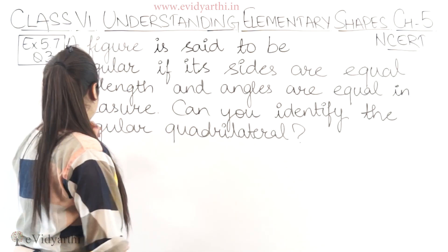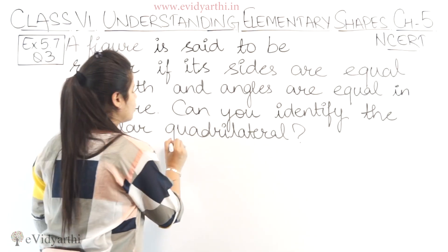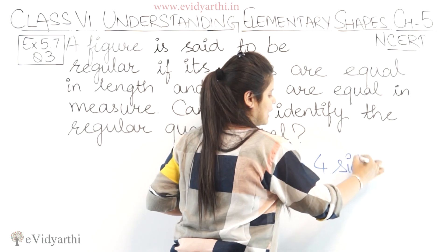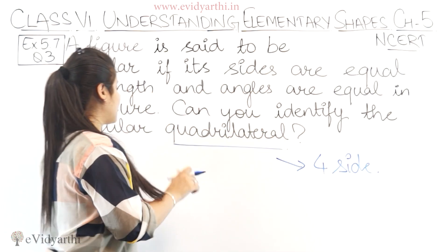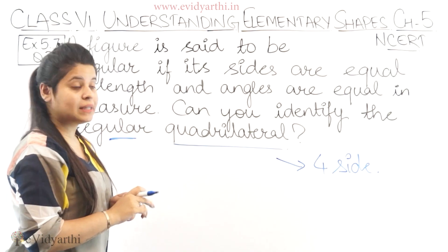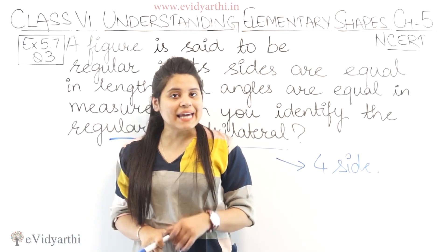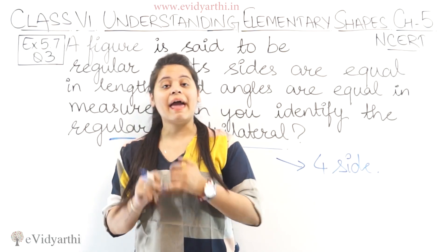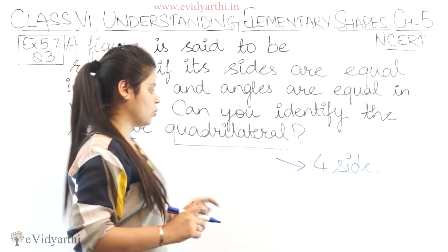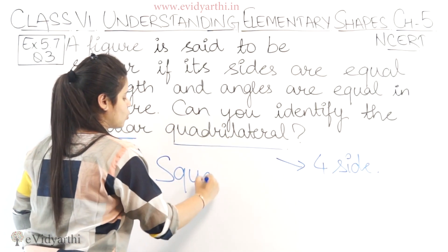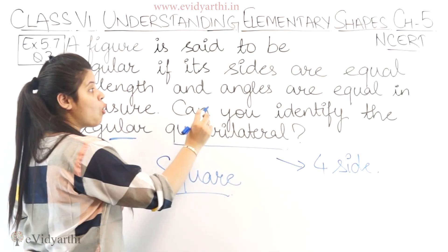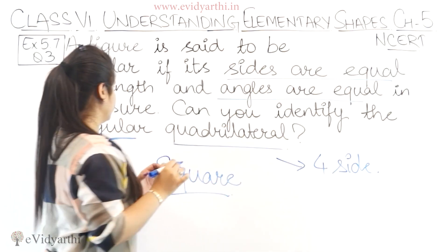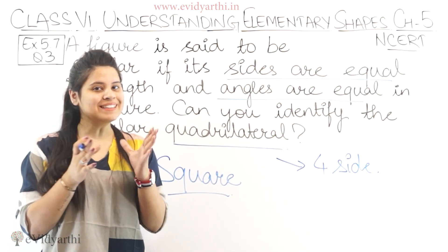Can you identify the regular quadrilateral? A quadrilateral is a four-sided figure. And since here it is regular, by the definition we have seen, we have to tell you that a four-sided shape has equal sides and equal angles. So that figure can be a square, because in a square all the sides are equal and also the angles are equal. So this means it can be a square.